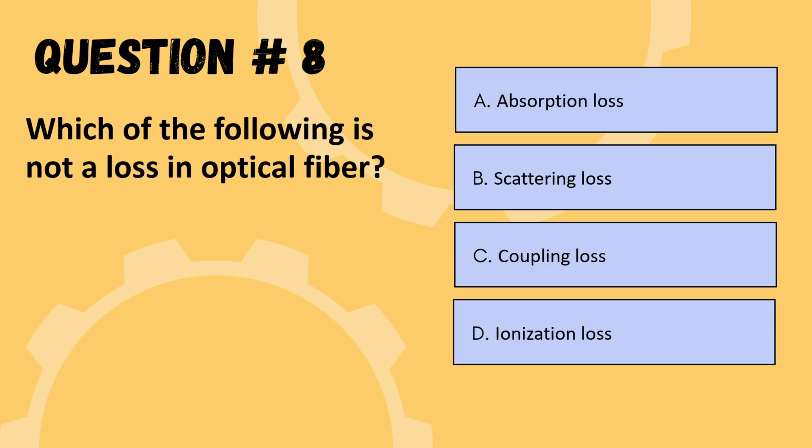Next question: which of the following is NOT a loss in optical fiber? Options are absorption, scattering, coupling, or ionization. The correct option is D: ionization loss.